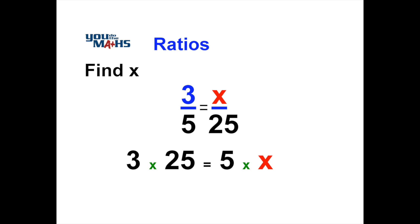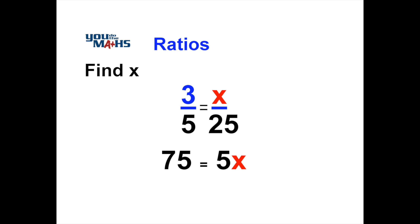So 3 by 25 and 5 by x. What happens is 3 by 25 equals 75, and 5 multiplied by x equals 5x.